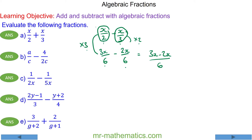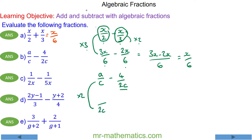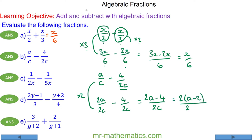That is 3x minus 2x all over 6, which is just x over 6. For question B we have a over c minus 4 over 2c. The lowest common multiple of the denominators is 2c, so we multiply the first fraction by 2, giving 2a minus 4 over 2c. We can factor the numerator to make 2 lots of (a minus 2) over 2c, then divide numerator and denominator by 2 to get a minus 2 over c.